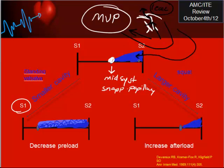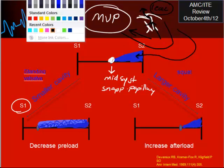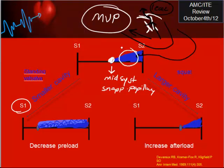That's why you will see a murmur during systole. The murmur is a mid-to-late systolic murmur. So this is the clinical diagnosis of mitral valve prolapse: mid-systolic click followed by mid-to-late systolic murmur.